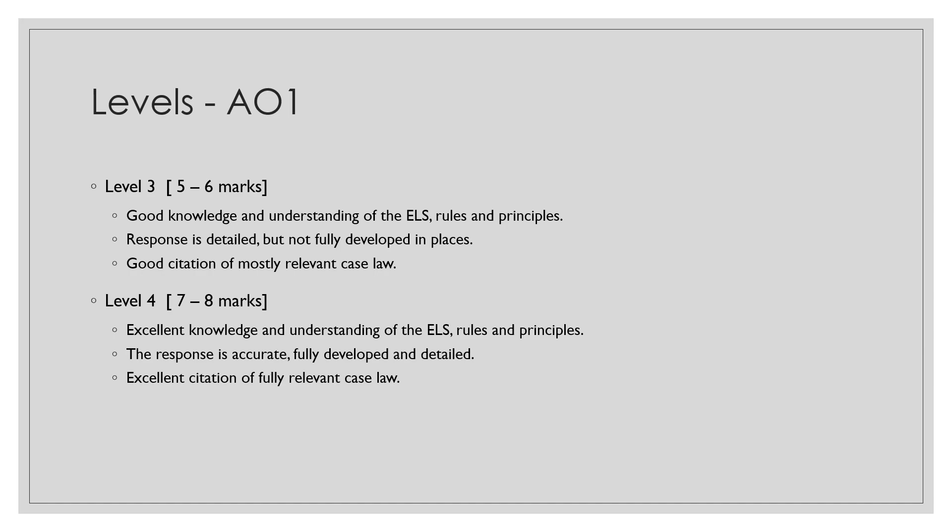The AO1 levels range from 1 to 4. A Level 3 AO1 is worth 5 to 6 marks — this reflects good knowledge and understanding of the English legal system, though the response would be detailed but not fully developed in some places, with mostly relevant case law cited. For Level 4, you need excellent knowledge and understanding, with a response that is fully developed, detailed and to the point, with fully relevant citation of case law. This is how examiners will categorise your answer to decide how many marks it is worth.